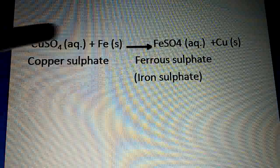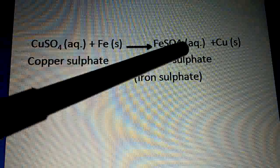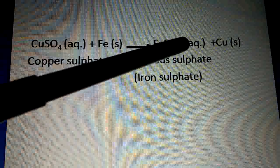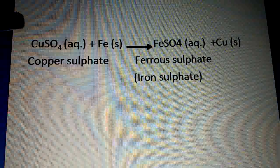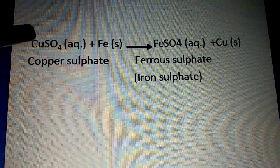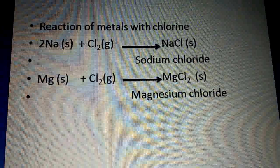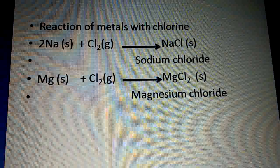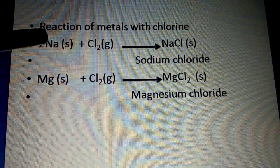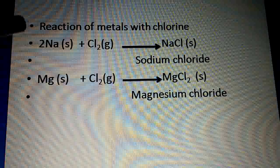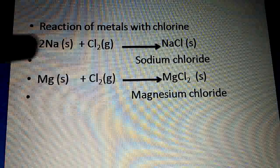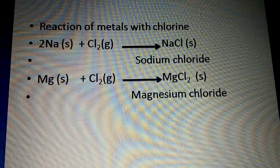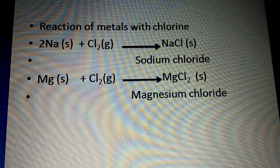Reaction of metals with chlorine: Na + Cl₂ → NaCl (sodium chloride). Mg + Cl₂ → MgCl₂ (magnesium chloride). When metals react with chlorine, metal salts are formed.